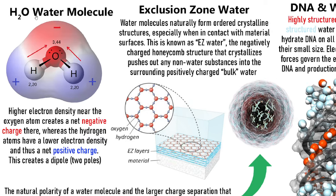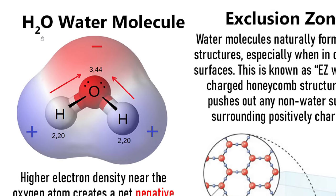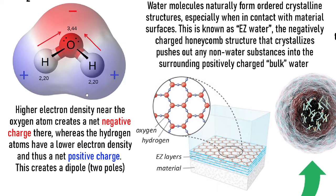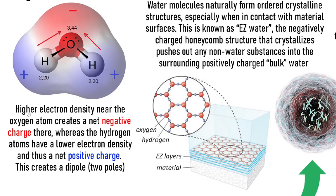Here we have a H2O water molecule — that's two hydrogens, one oxygen. We see that oxygen atom, we see the electrons as those black dots, we see the hydrogen here. What happens with a single water molecule is that there is a higher electron density near the oxygen atom, creating a net charge that's negative, while the hydrogen atoms have a lower electron density and thus a net positive charge. This creates a dipole.